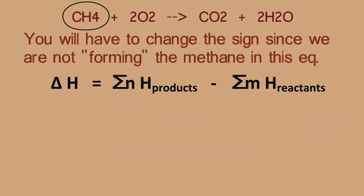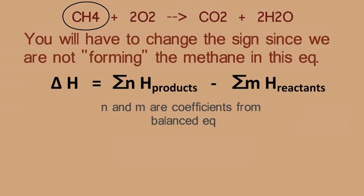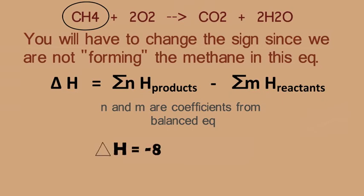A reminder for Hess, ΔH is the sum of nH products minus sum of mH reactants. n and m are the coefficients that you find in the balanced equation. Of course, you always have to balance the equation to really understand everything in chem. And going back to the heat of formation for CH4, changing the sign, we get negative 890.3 kilojoules per mole.